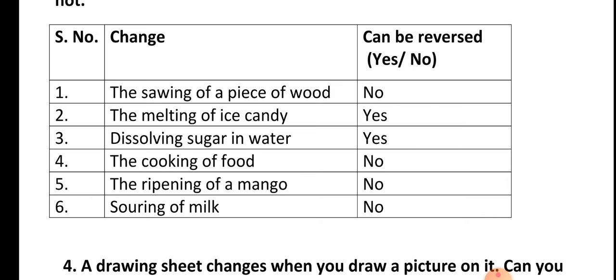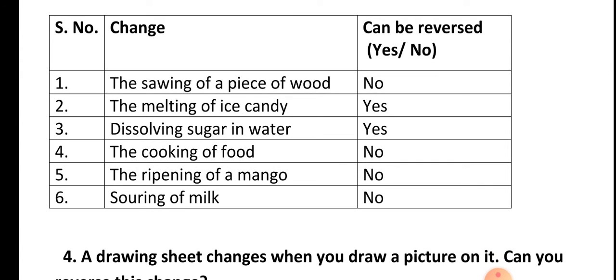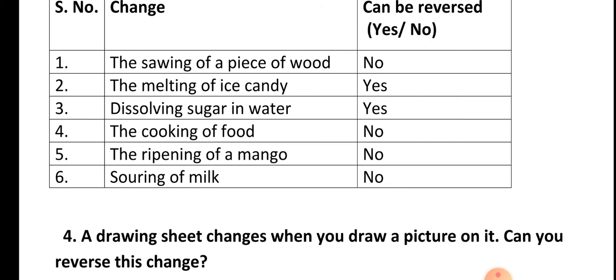Third, dissolving sugar in water is a reversible change. When you mix the sugar inside the water it will completely dissolve; then if you heat the water, the water changes into vapor and the solid sugar particles will be left behind inside the beaker. Fourth, cooking of food is an irreversible change because you cannot convert cooked food back into raw food material.